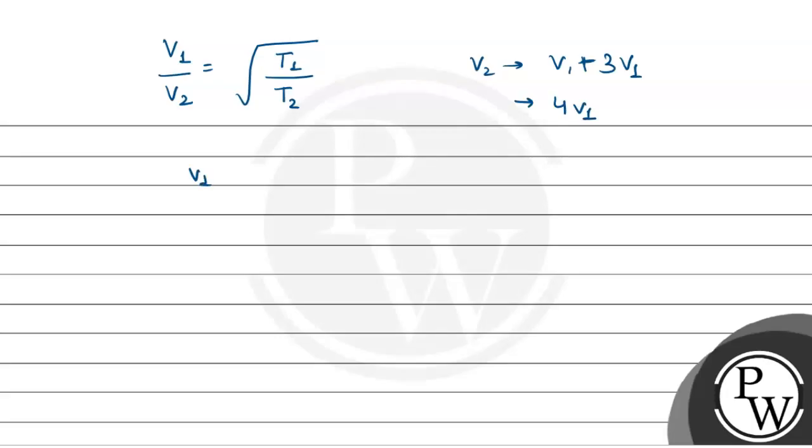Equation में put करते हैं: V1 divided by 4V1 is equal to root 223 Kelvin divided by T2. V1 cancel हो जाएगी. 1 by 16 is equal to 223 by T2. Square करने पर, T2 is equal to 223 into 16 Kelvin.